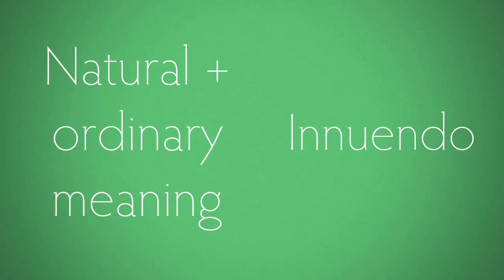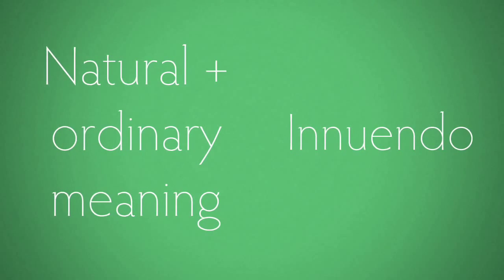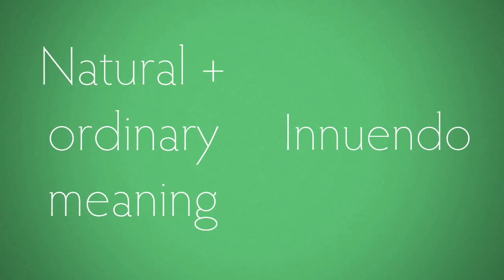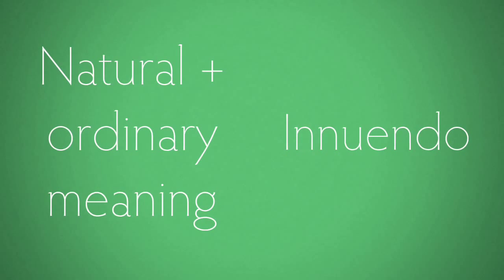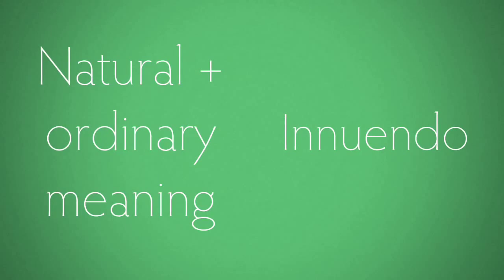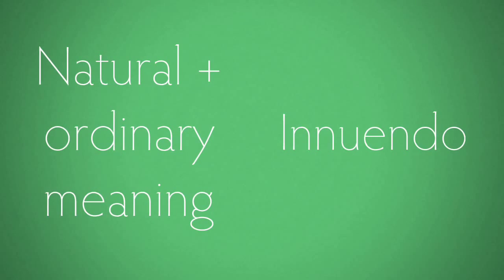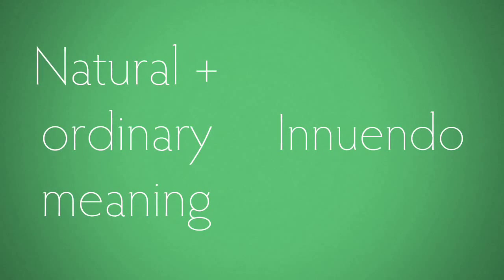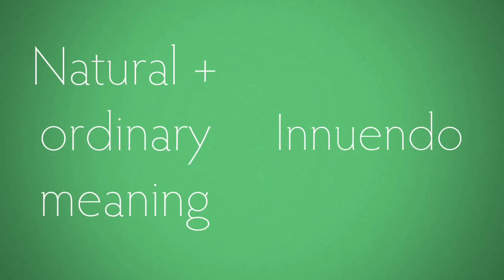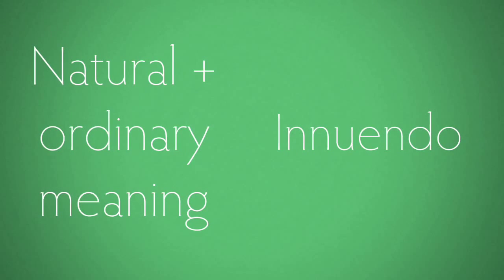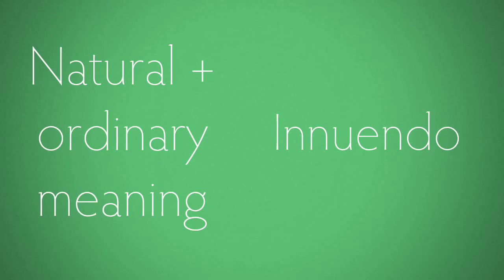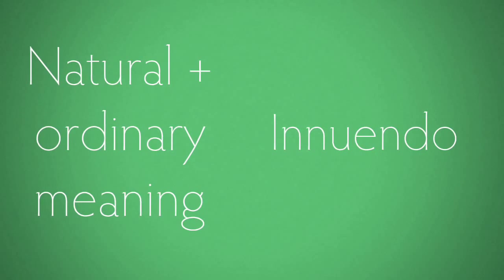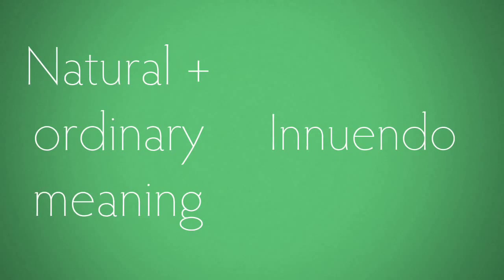Imputations can arise from the natural and ordinary meaning of the words, but they can also arise from what we call innuendo — the subtext of what is being said, or the secondary meaning of what is said once you combine it with information from external factors. So if there is certain context or external information that people are aware of, and you combine that with what is said to reach an imputation, that can still be defamatory as innuendo, even though what was said by itself might fall short.